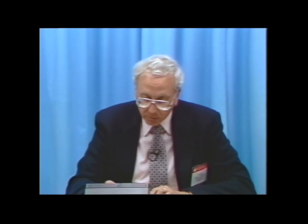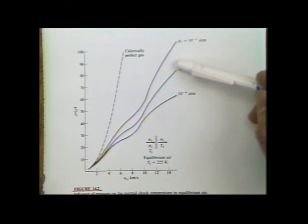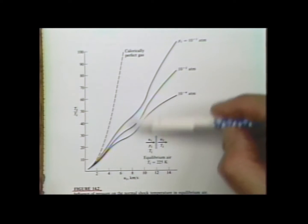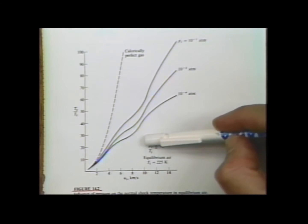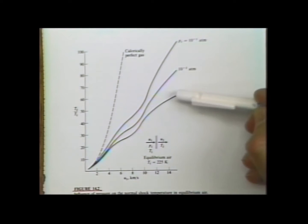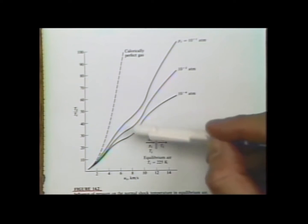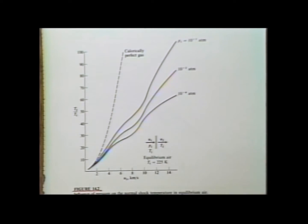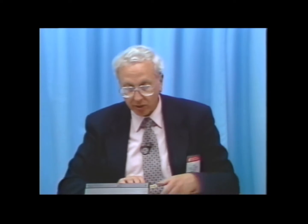The pressure in front of the shock also makes a difference. As we reduce the pressure in front of the shock, the temperature ratio at any given velocity is reduced. Why? Because lower pressure allows dissociation to occur more readily — high pressure squeezes dissociation out of the gas, while low pressure allows it more readily. So at lower pressures you get more dissociation behind the shock and therefore the temperature ratio is less. It is important to take these chemical reacting effects into account when calculating flows across shock waves in hypersonic flows.